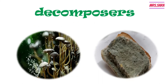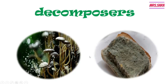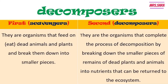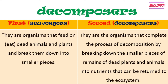Now we're going to talk about decomposers. We have here fungi and mold — these are called decomposers. We have two types: the first decomposers are called scavengers. Scavengers are organisms that feed on or eat dead animals and dead plants and break them down into smaller pieces. The second decomposers are organisms that complete the process of decomposition by breaking down the smaller pieces of the remains of dead plants and animals into nutrients that can be returned to the ecosystem. The second decomposers complete the work of the scavengers.